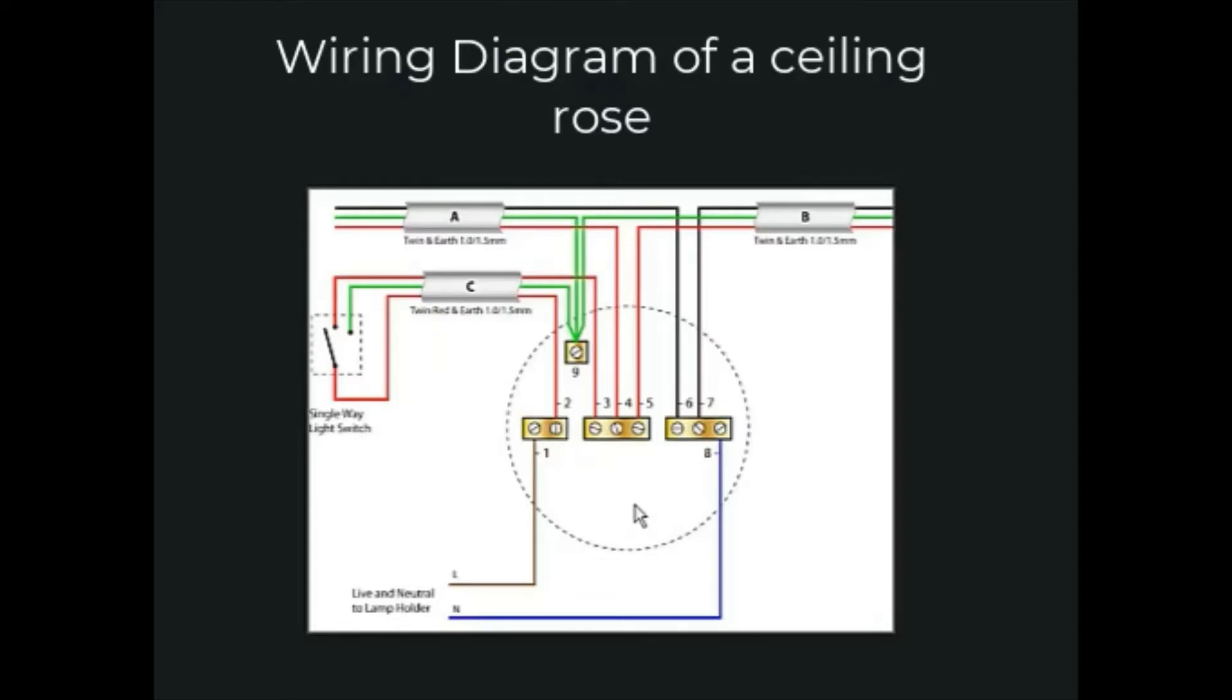If this is possible, then you only have to disconnect the pendant and connect the switch live and neutral from the new light to terminals 1 and 8.